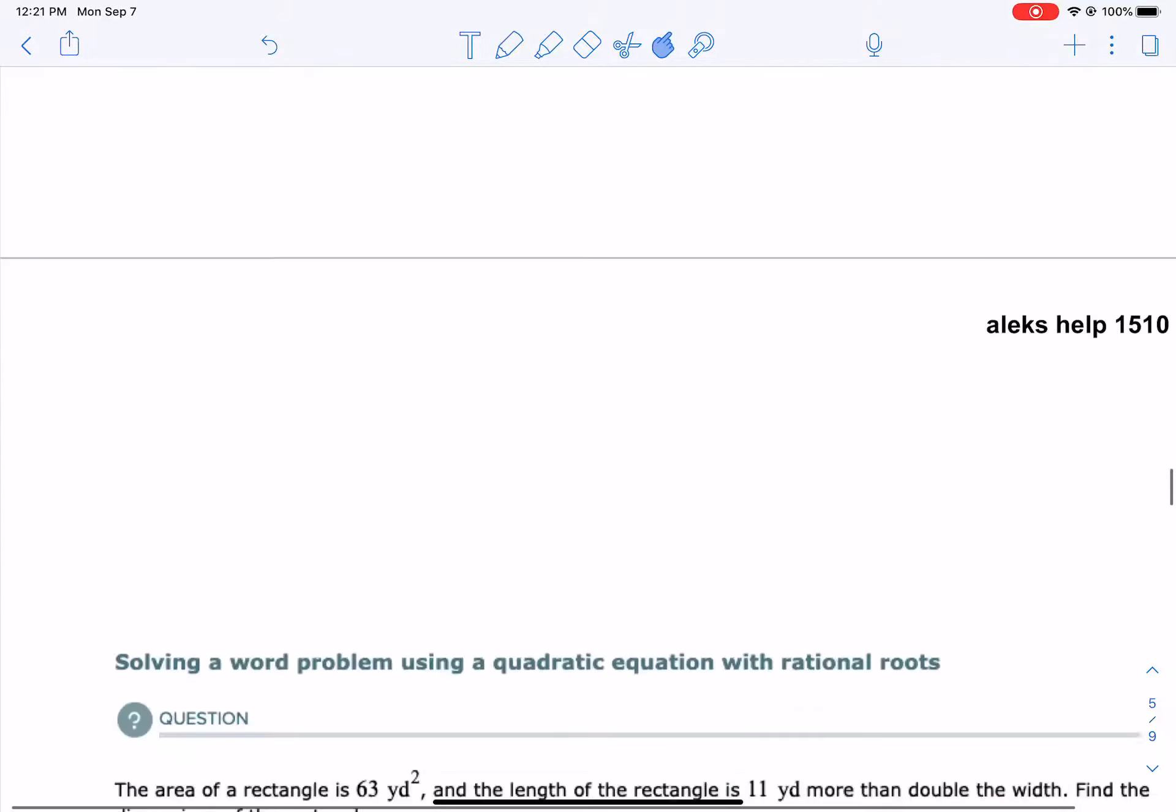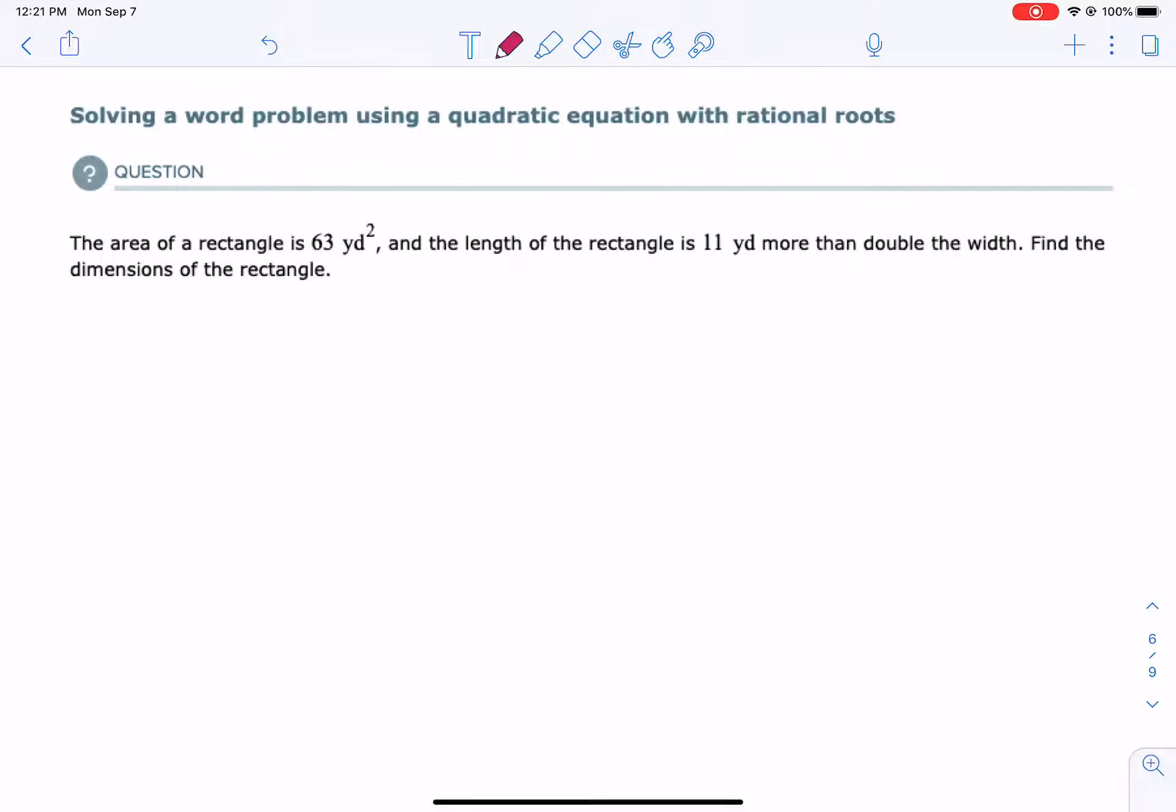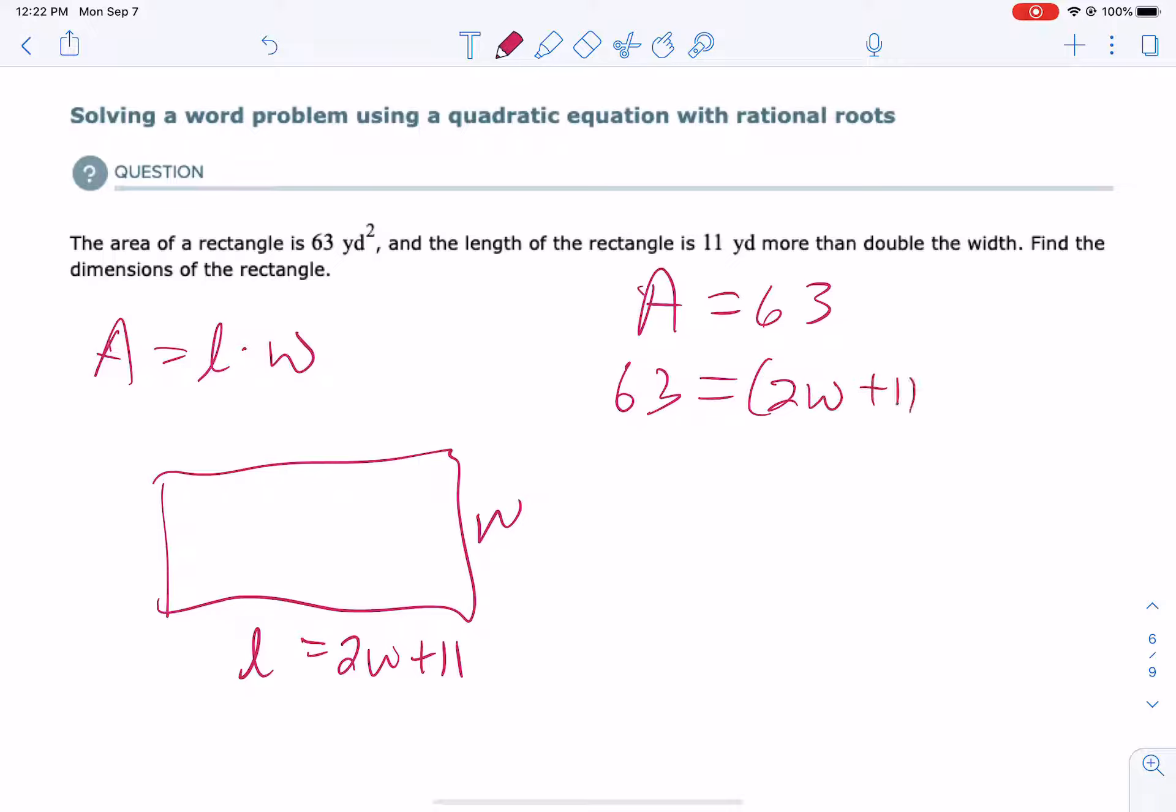Let's do the next one. It says the area of a rectangle. So before we go further, remember, area of a rectangle is length times width. So if we have some rectangle here, and I make an excellent rectangle, let's call that the length and the width. It says the area is 63. The length of the rectangle is 11 yards more than double the width. So that means if we double the width, we need to add 11. So what do we know? Well, we know that 63 has to be the length, 2w plus 11, times the width. So let's find the dimensions. So we need to find the w, so then we can find both length and width. And so this would be 2w squared plus 11w. Now that's quadratic.